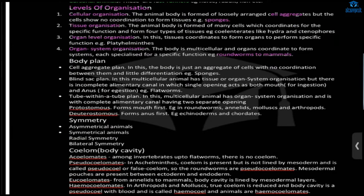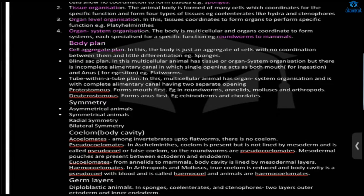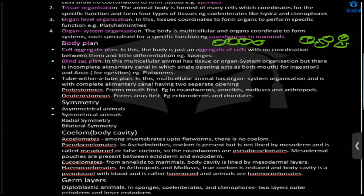Now the body plan or body design. In the cell aggregate plan, cells are aggregated loosely with no coordination. In tissue organization, cells join up and coordinate. In the blind sac plan, there is only one single opening — food comes in and waste exits through the same mouth. In the tube-within-tube plan, there are two separate openings: a mouth for ingestion and an anus for excretion.